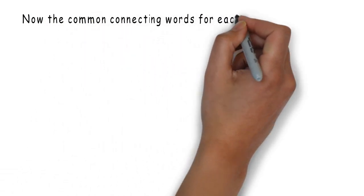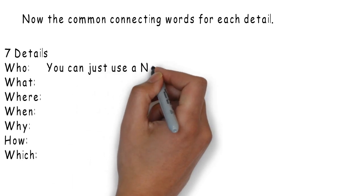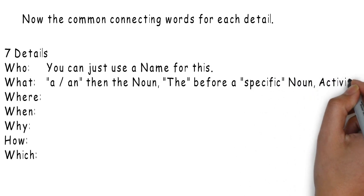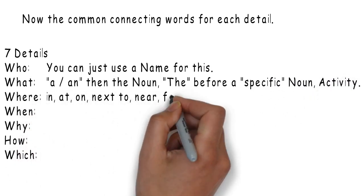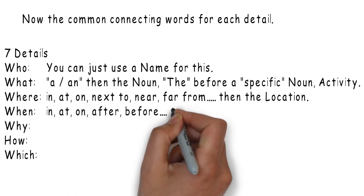Now, the common connecting words for each detail. Who: You can just use a name for this. What: A and an, then the noun. The, before a specific noun, or the activity. Where: In, at, on, next to, near, far from, then the location.